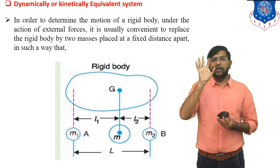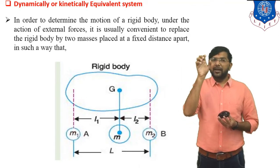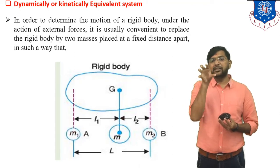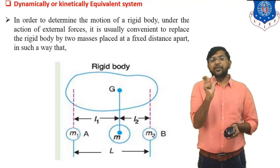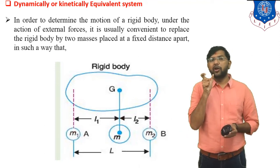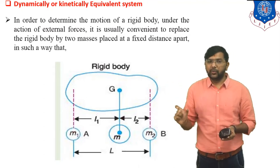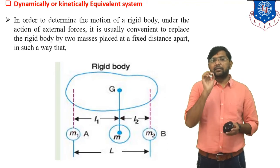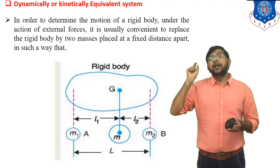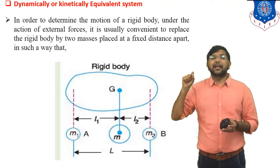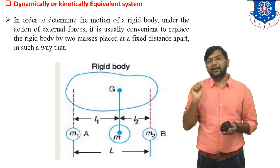This rigid body has two masses M1 and M2. Capital M indicates the total mass of the body, and capital L indicates the total distance of the rigid body. The distance between M1 and G is small L1, and the distance between G and M2 is small L2. Small M1 is located at point A, and small M2 is located at point B, so the distance between A and B is capital L.